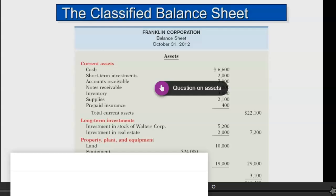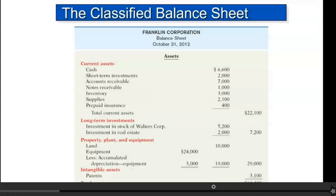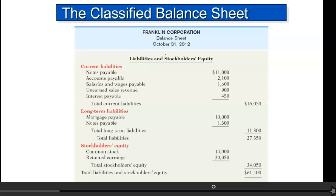Receivables and so on. On the liability side, same thing. We have current liabilities and long-term liabilities. Current liabilities: $16,050. Long-term liabilities: $11,300. The inside column gives you a more detailed list of what those current liabilities and long-term liabilities are.